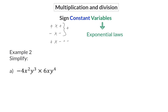Example 2, simplify. Here we have one term that is multiplied, so we need to determine the final sign, constant, and variables. For the sign, we have a minus times a plus, which will give us a negative value. For the constant, we have 4 multiplied by 6, and that is 24. For the variable x, we have x to the power of 2 times x to the power of 1, and when using my exponential laws, I will add the exponents to get x to the power of 3. For the variable y, we have a power of 3 and a power of 4, which will give us y to the power of 7.